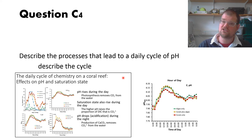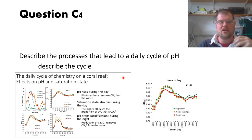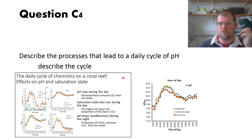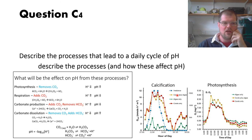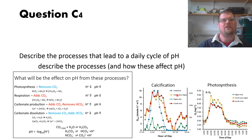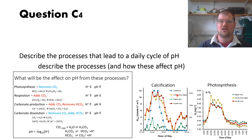It would be good to first describe what the pH cycle on coral reefs actually is, since it's not explicitly stated in the question. The cycle is that in the nighttime, when there is no sun, you tend to have lower pH, and in the daytime you have higher pH. That was explained in the coral reef lecture. The bulk of the credit was really for describing the processes that lead to those changes.